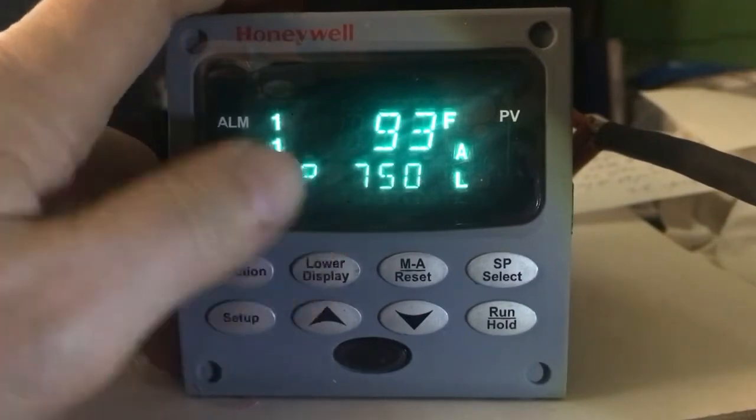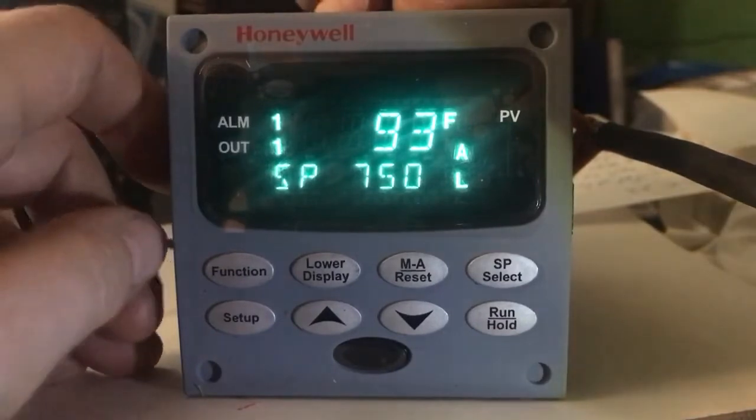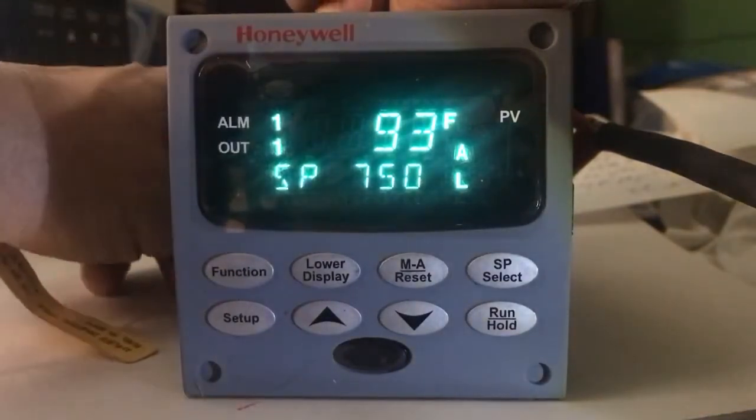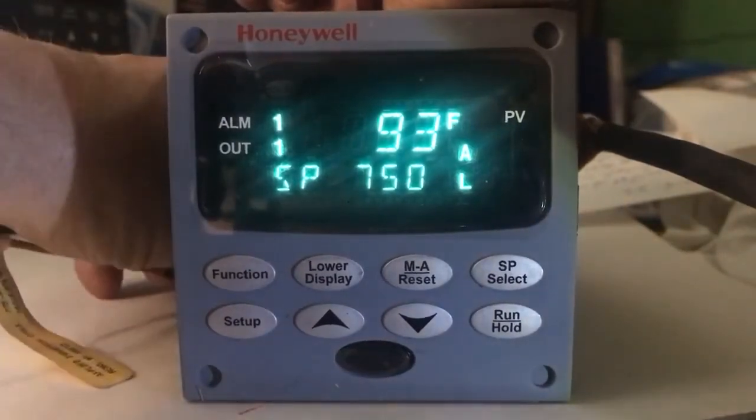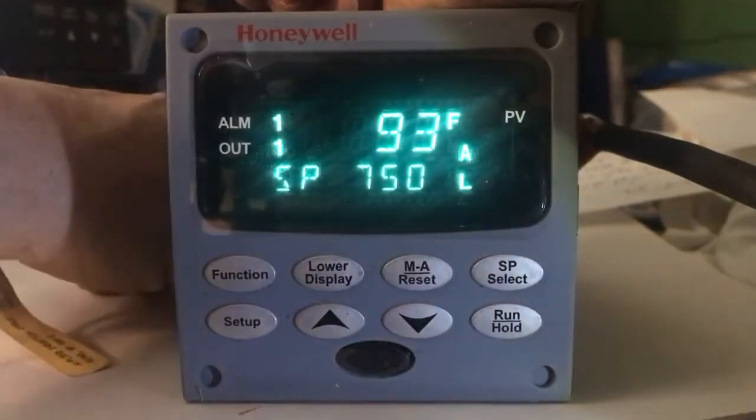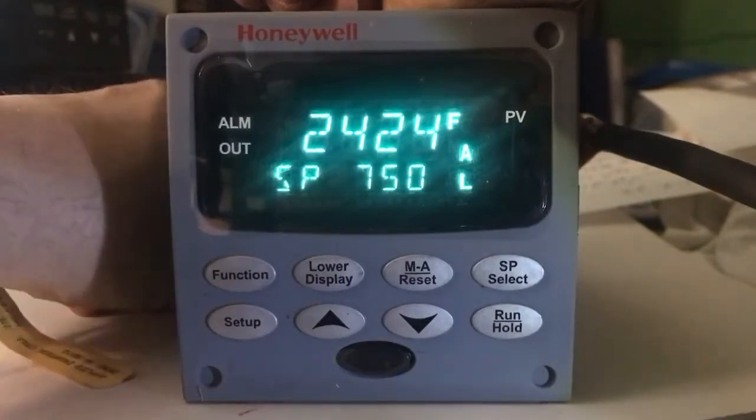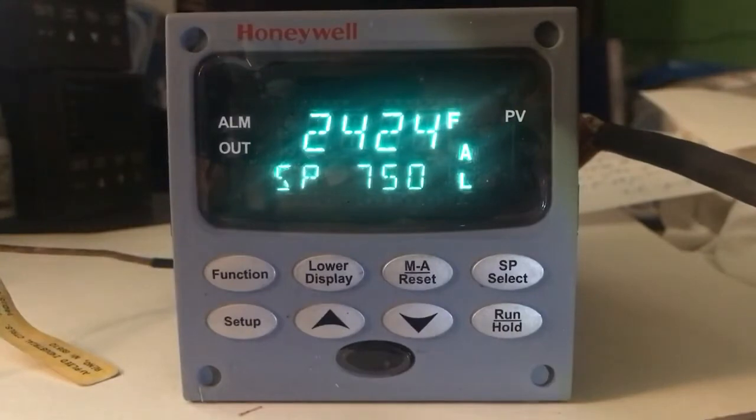Now I'm going to pull the thermocouple out of the controller, simulating a fault in the thermocouple. So let's remove the thermocouple. Right now it's at 93 degrees because it's in a warm electronic environment. Once you detach it, it's 2424. If you see the display there, the IN1 fault, that's because the thermocouple is unplugged.